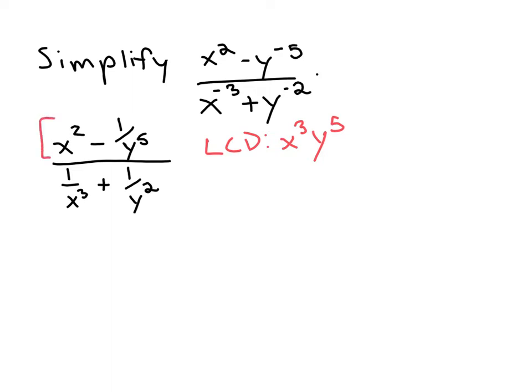Notice that if we multiply the entire numerator and denominator by that LCD, x cubed y to the fifth, each of those inner denominators will cancel.